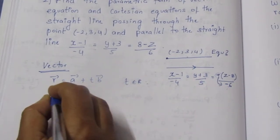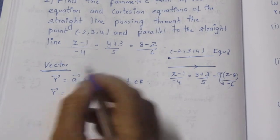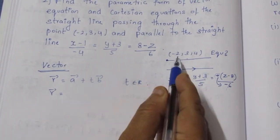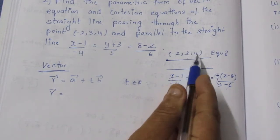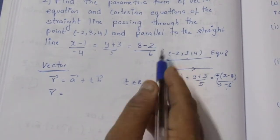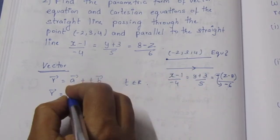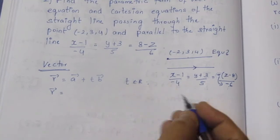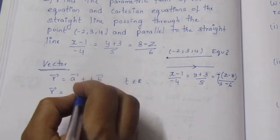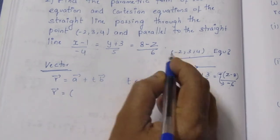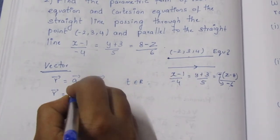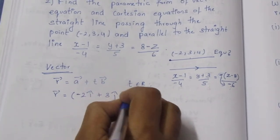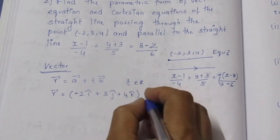R vector equals a vector, where a vector is the point. So if I write a vector, you can write a i-cap, j-cap, k-cap. A vector is the point, so minus 2 i-cap plus 3 j-cap plus 4 k-cap. Plus t.